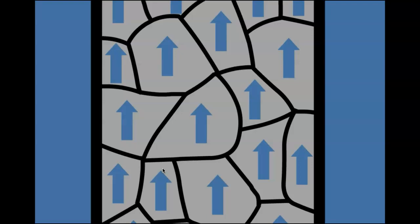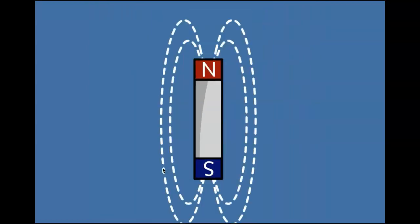In a magnet, all of the domains are lined up so that they face in the same direction. That creates a magnetic field.